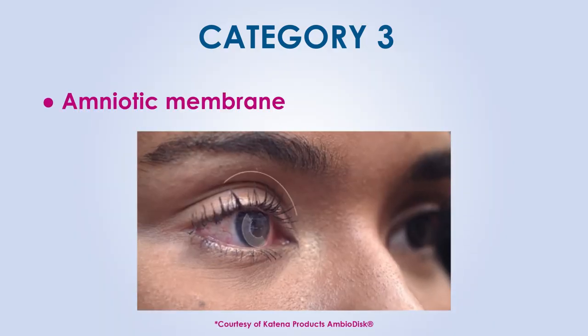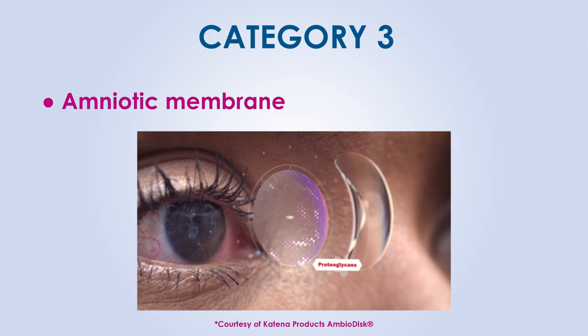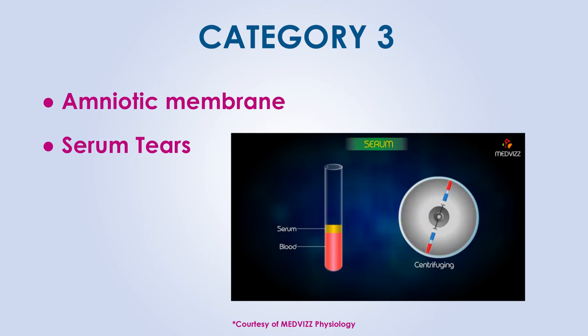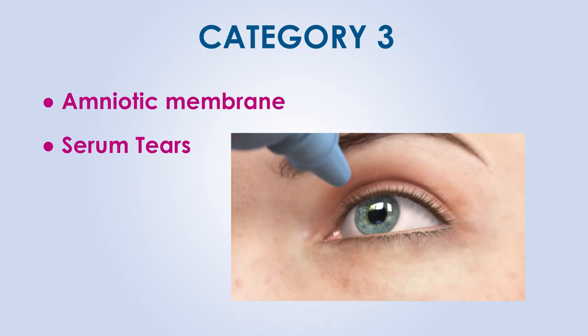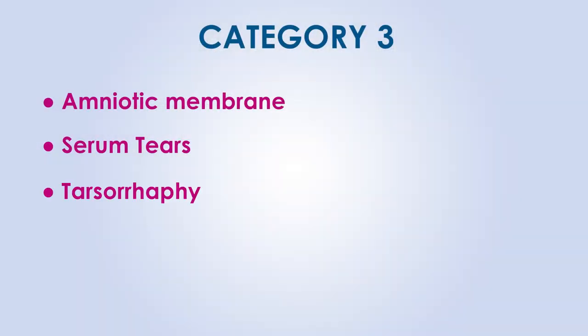Category 3: in this situation, aggressive management is required as the integrity of the eye itself is at risk. An amniotic membrane may be placed on the eye, as it is packed with anti-inflammatory, anti-scarring, and pro-growth factors to jumpstart the healing process. We may prescribe serum tears, which are specialty tears developed from the patient's own blood. The patient reports to a lab, has their blood processed, and then mixed with the typical components of artificial tears. Interestingly, our blood is enriched with many anti-inflammatory growth factors which can help the ocular surface heal. Finally, in some cases, a tarsorrhaphy may be performed, which is a surgical intervention that partially closes the eyelids to prevent the ocular surface from drying out, essentially reducing the amount of surface area that needs to be adequately covered with tears.